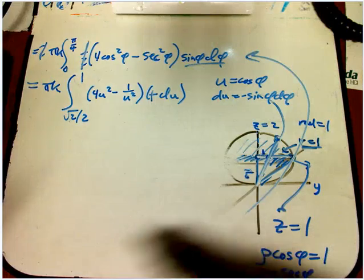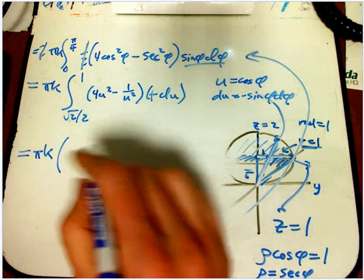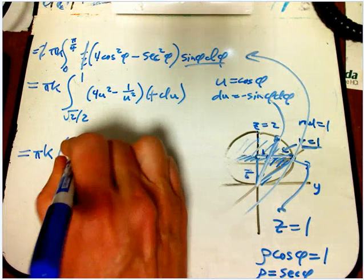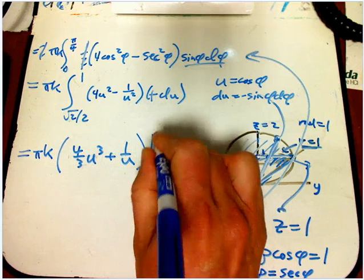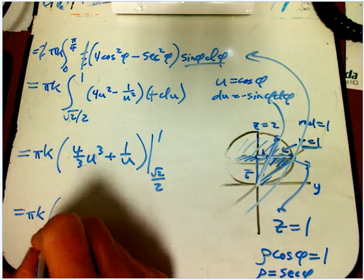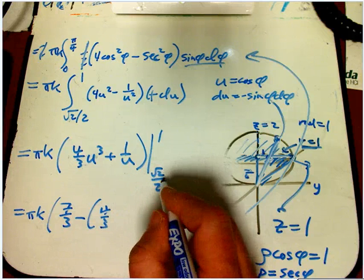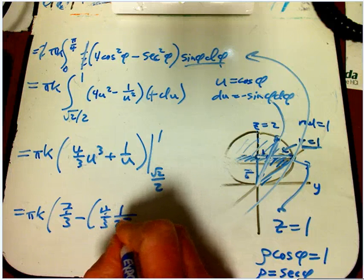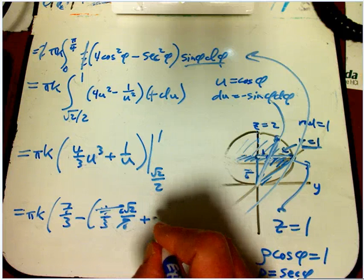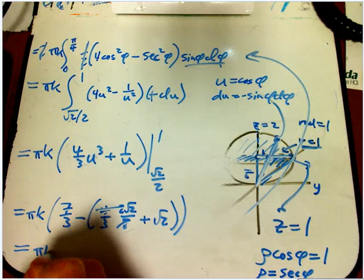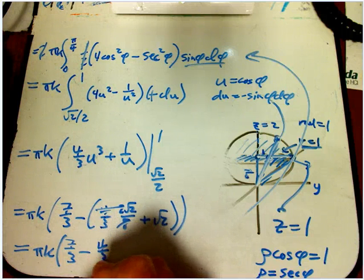So now we've got pi k, and now this is pretty easy. This is just going to be 4 thirds u cubed plus 1 over u, all from root 2 over 2 to 1. And so it's pi k times 4 thirds plus 1, so 7 thirds, minus 4 thirds root 2 over 2 cubed is 1 over 2 root 2. Let me just call it 2 root 2 over 8, and that all cancels. And then plus root 2. So it's pi k times 7 thirds minus root 2 over 3, but then another root 2, so it's really 4 thirds root 2.